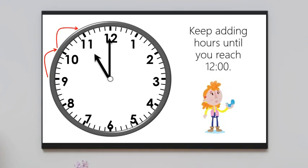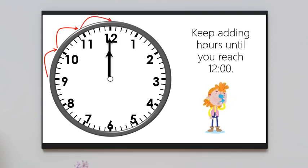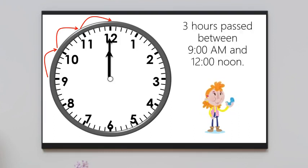Keep adding hours until you reach noon. Now it's 11 o'clock. And now it's noon. So that means three hours pass between 9 a.m. and 12 noon.